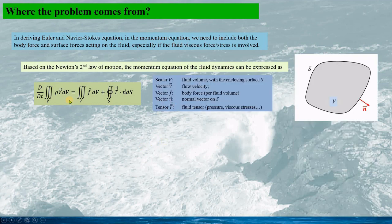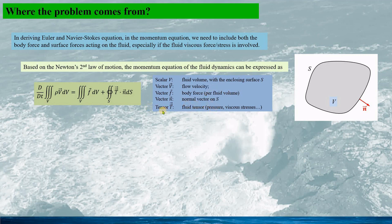Here, scalar V is the fluid volume with the enclosing surface S, and the vector V is the flow velocity. Vector F is the body force per fluid volume, and the vector N is the normal vector on the surface S. Tensor capital T is the fluid total stress tensor, including pressure and viscous stresses.